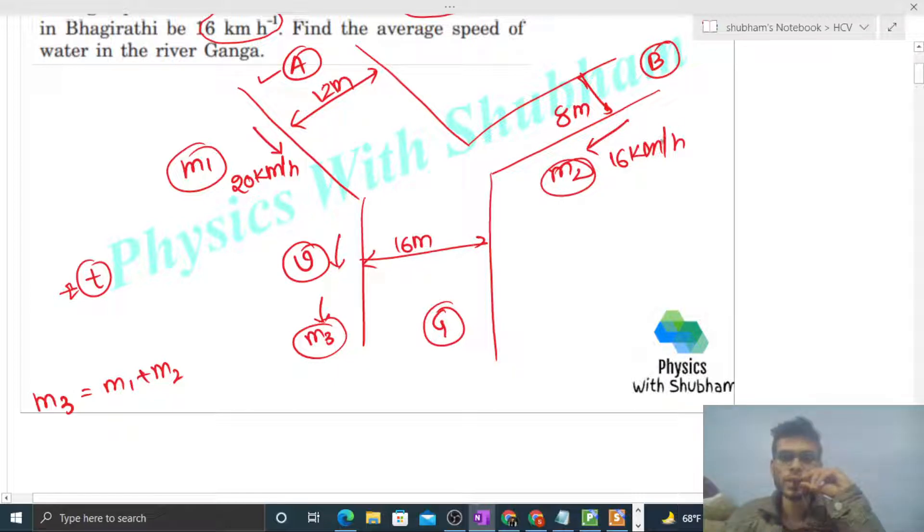The mass of water passing through Alaknanda will mix with the mass of water passing through Bhagirathi, and m1 and m2 combined will pass through river Ganga. That's why m3 equals m1 plus m2. Now if this time interval is one second, then we can say the mass flow rate will be m3 equals m1 plus m2.